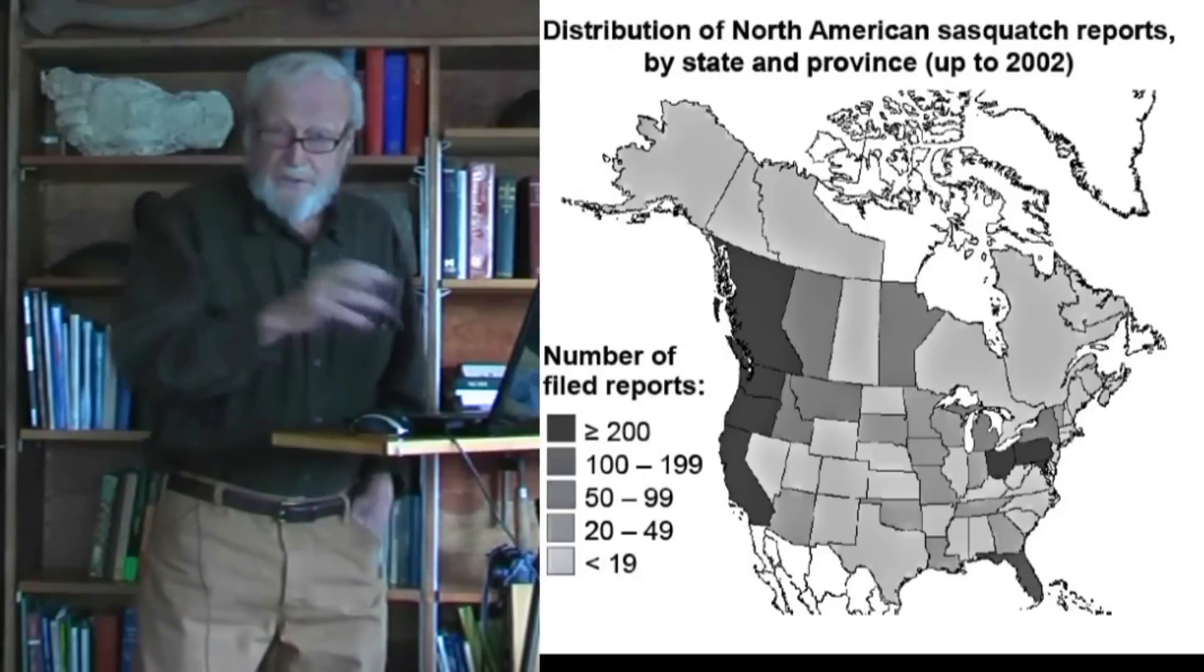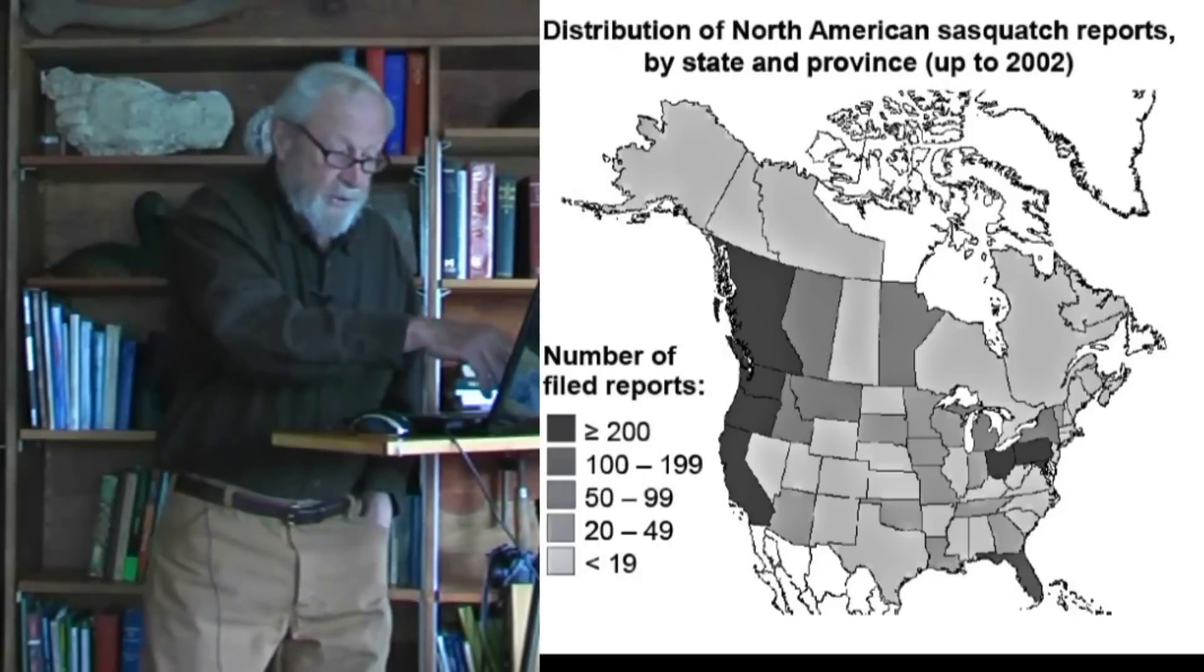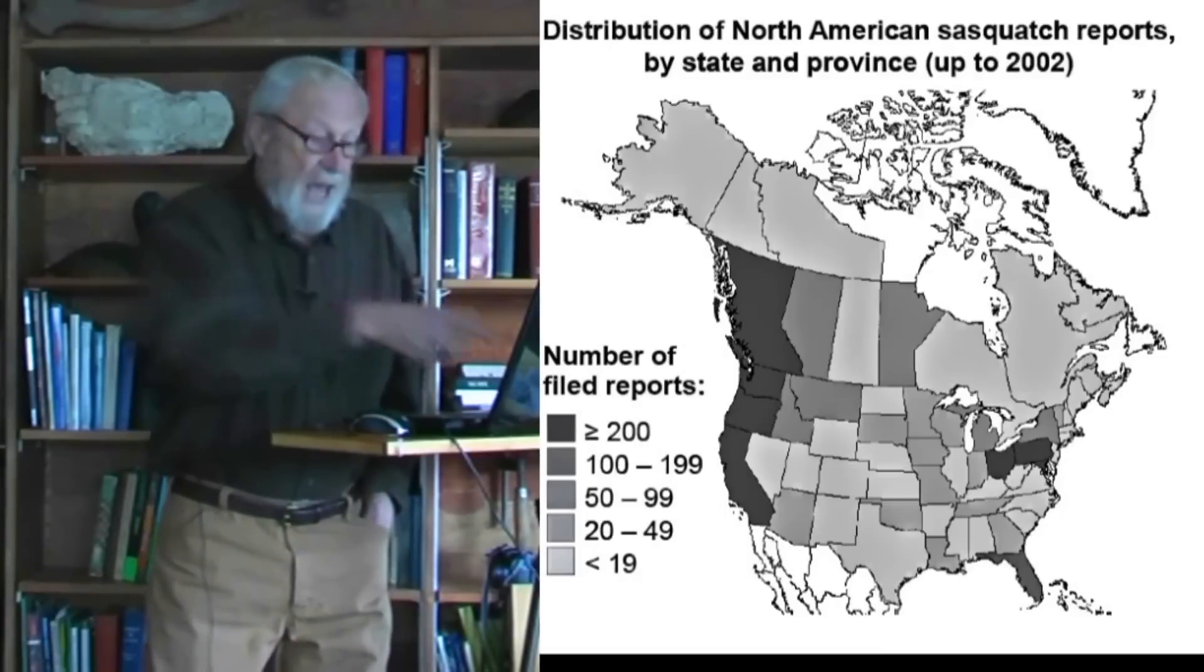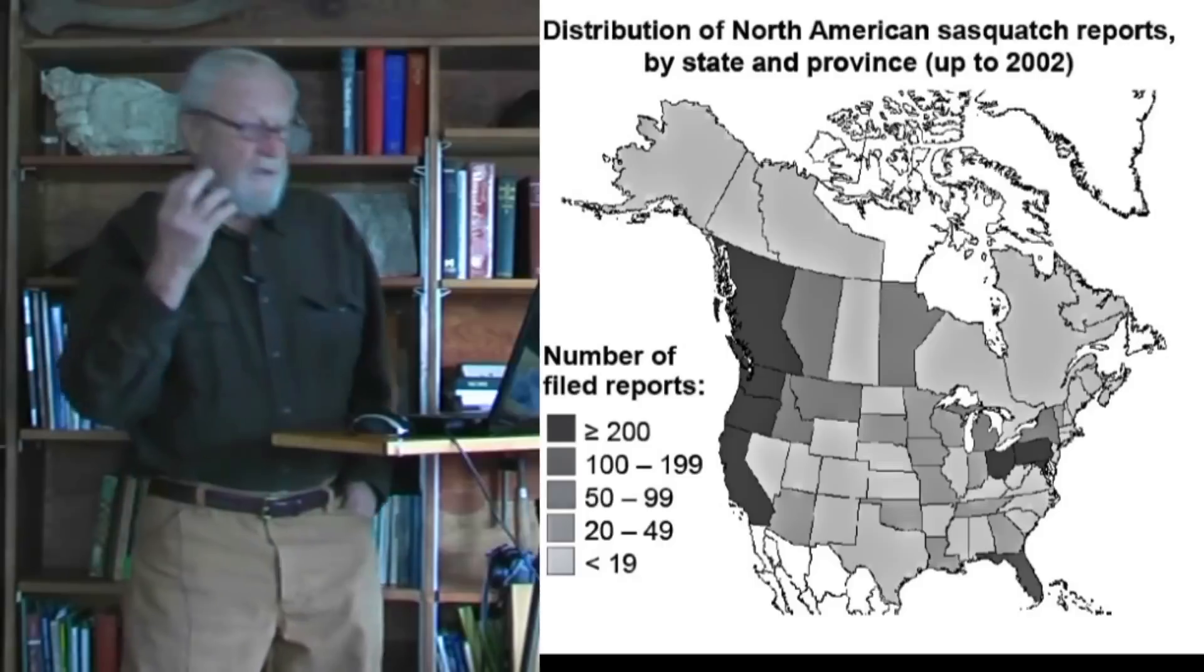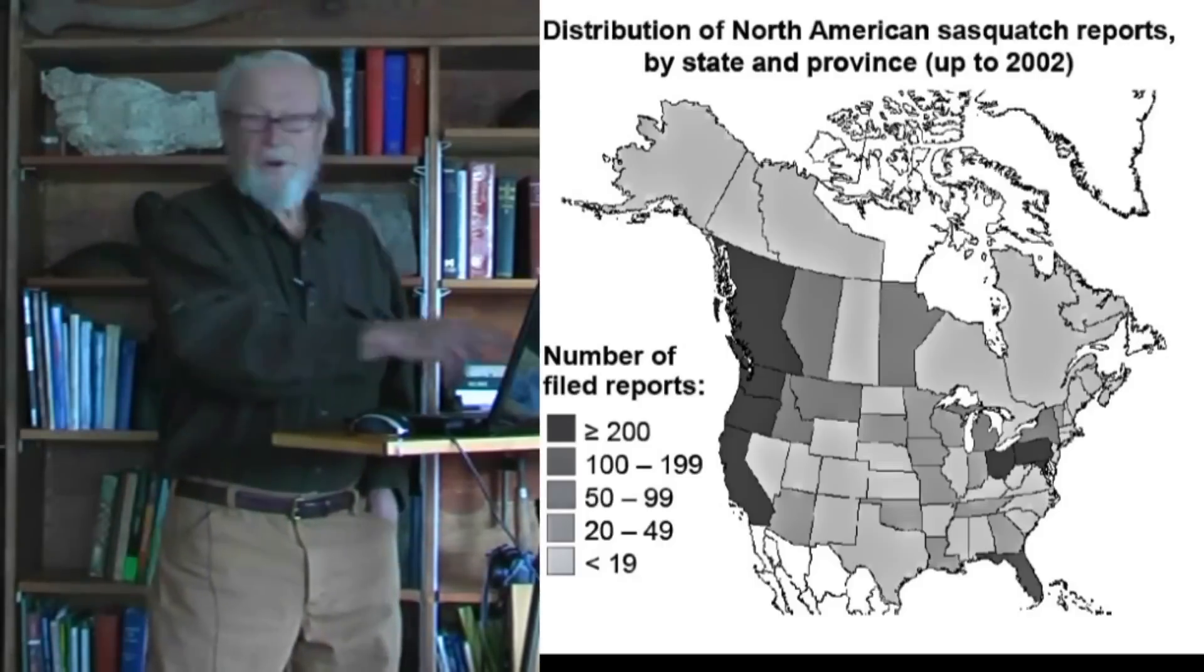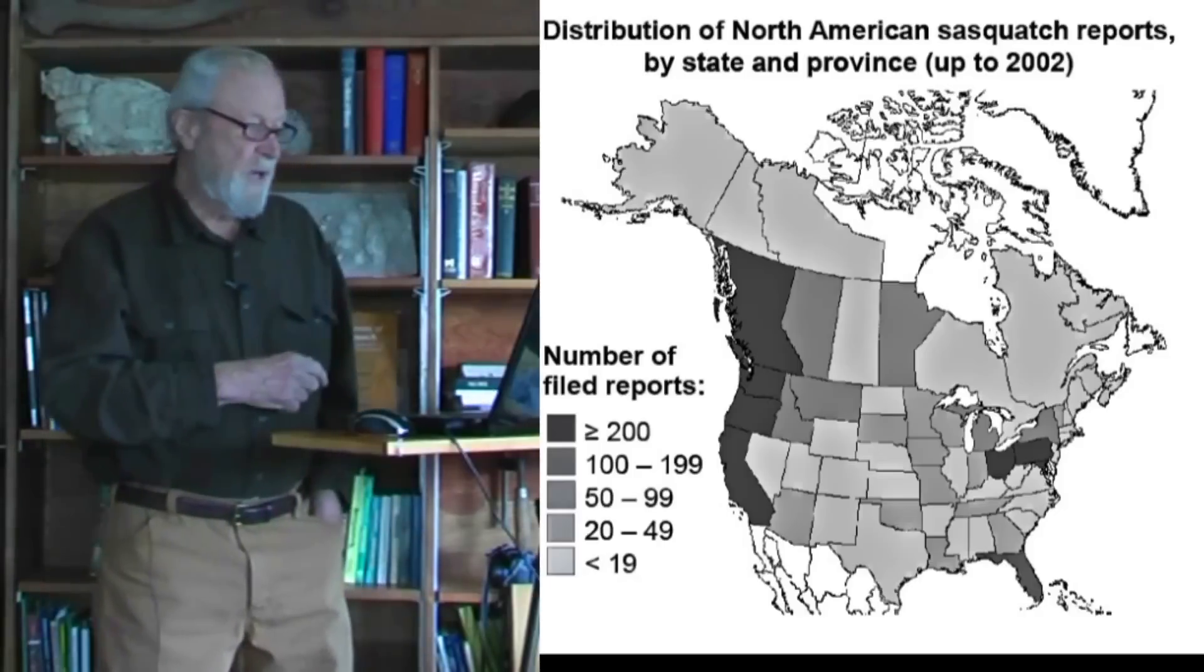But there is this area of numerous reports in Ohio, Pennsylvania, even Maryland in the American Midwest and East. And if we accept the swamp monkey or skunk ape of Florida as a Sasquatch, then we have to add Florida as well.